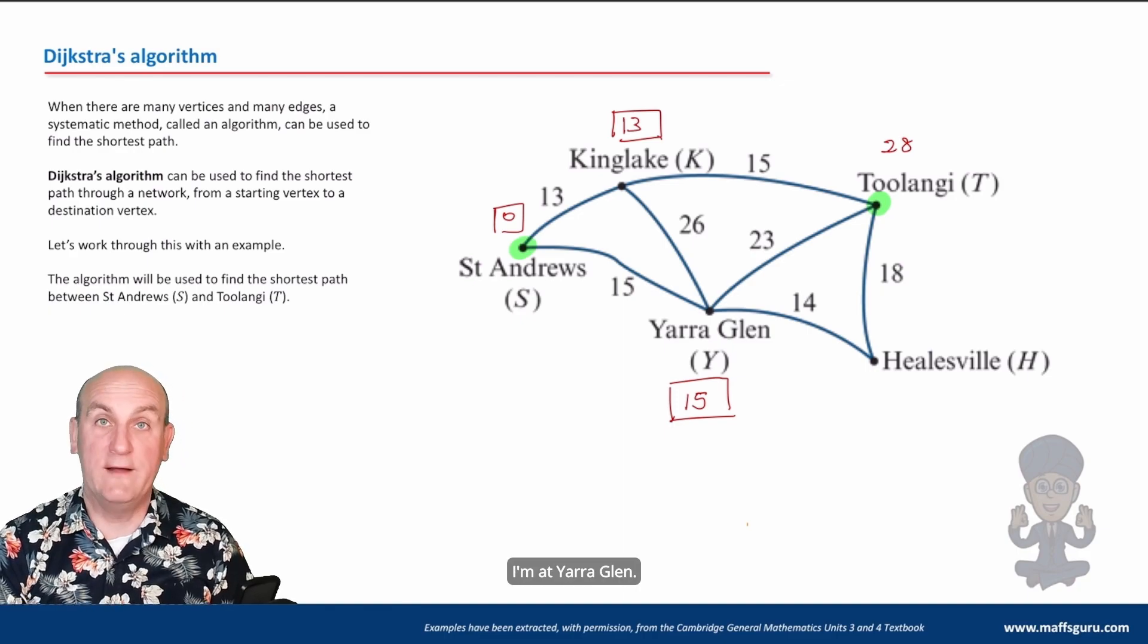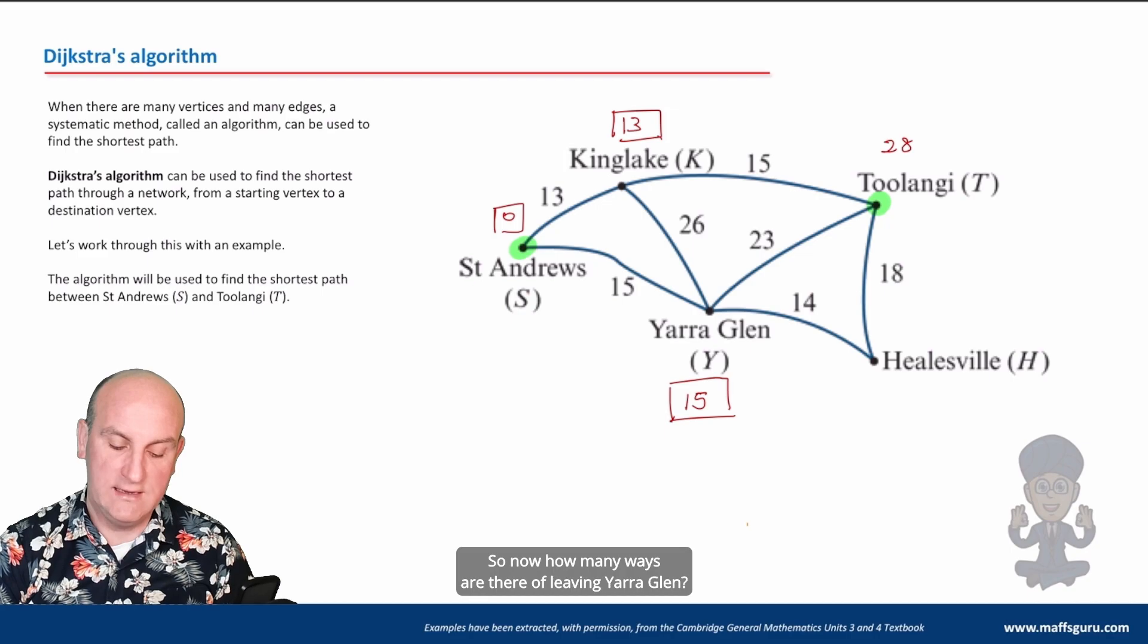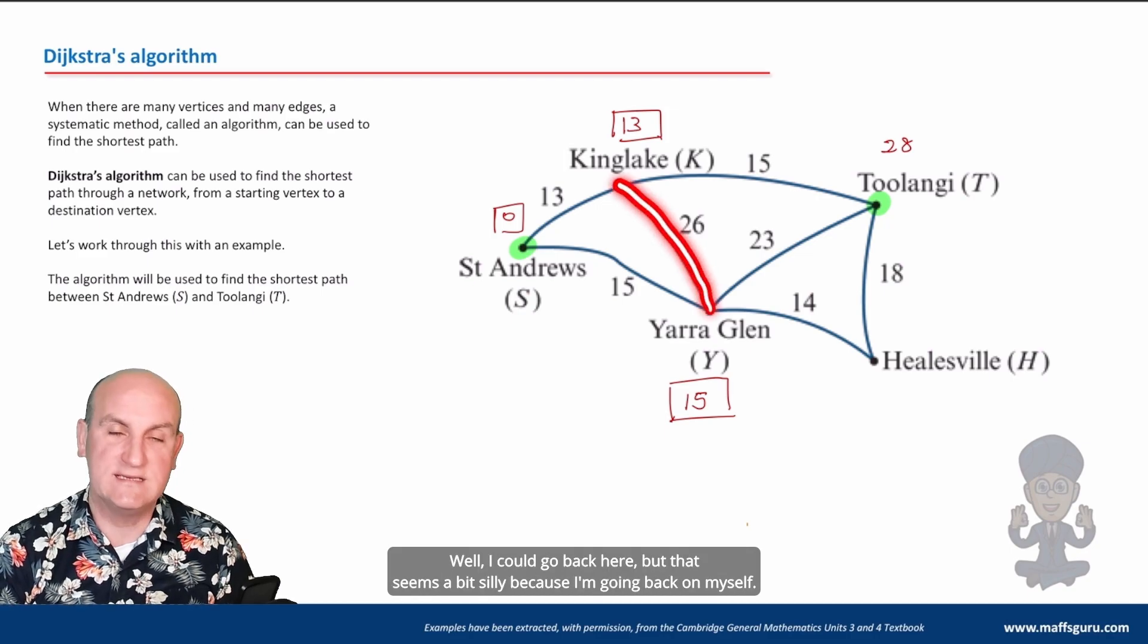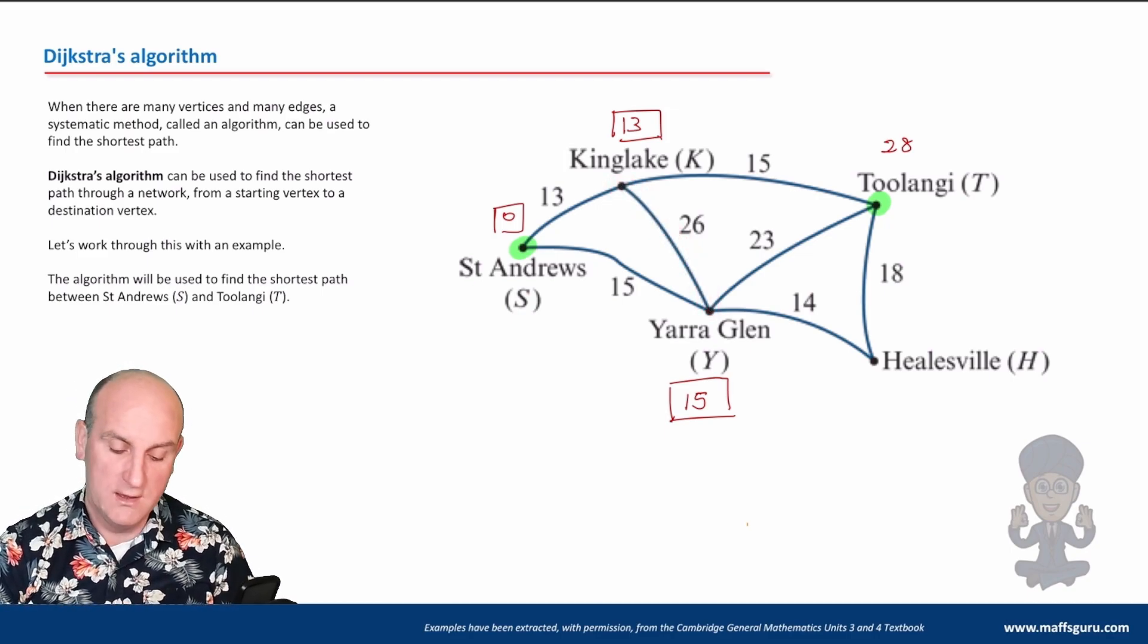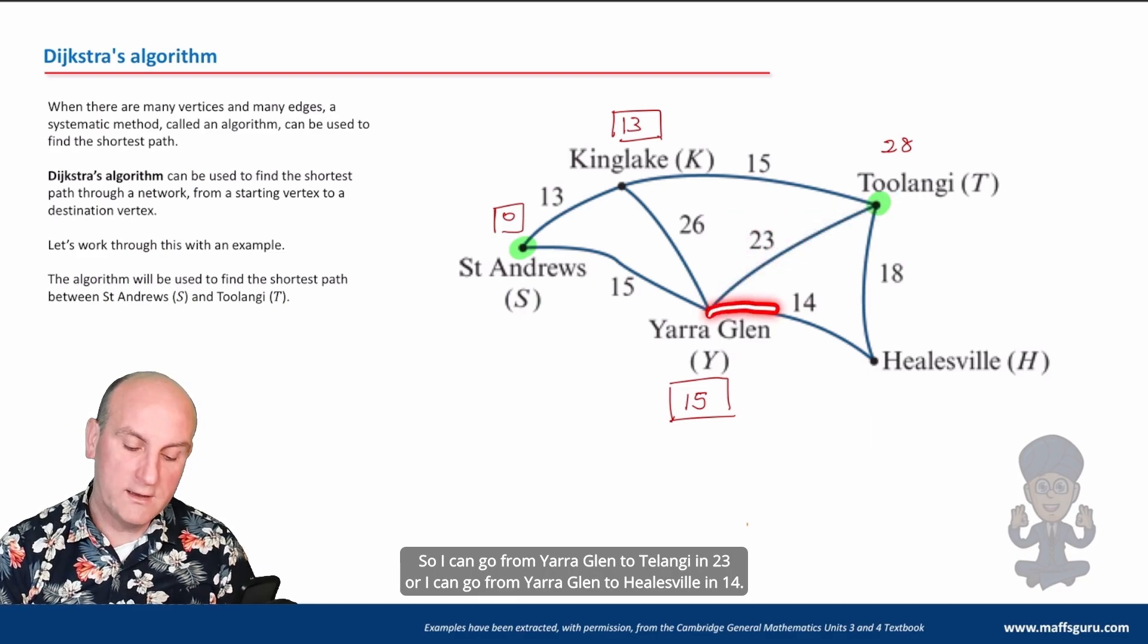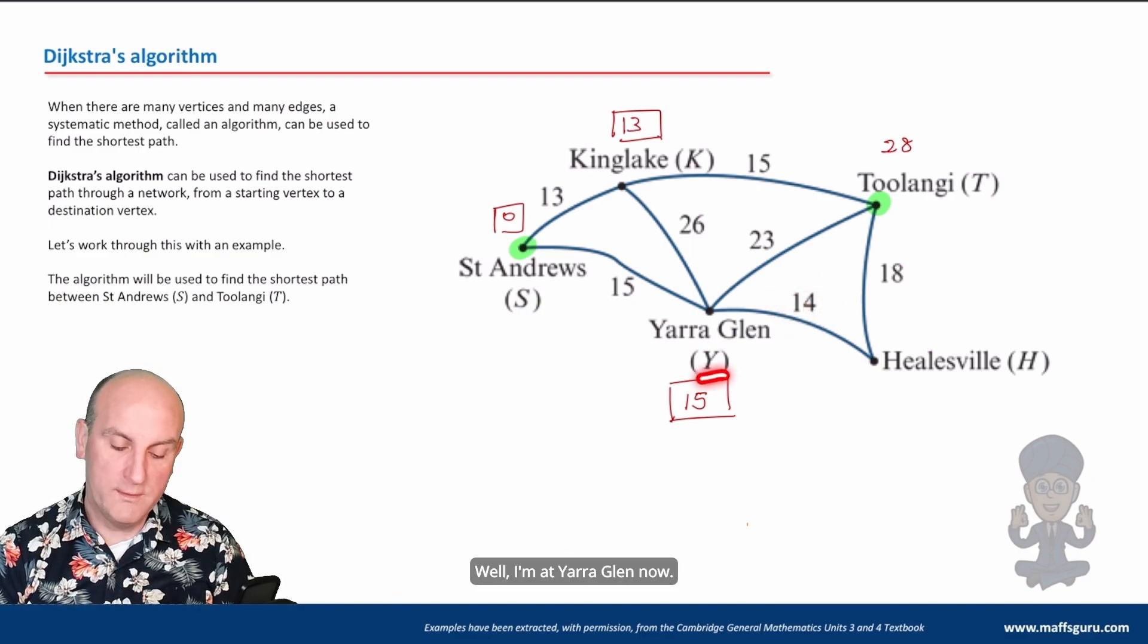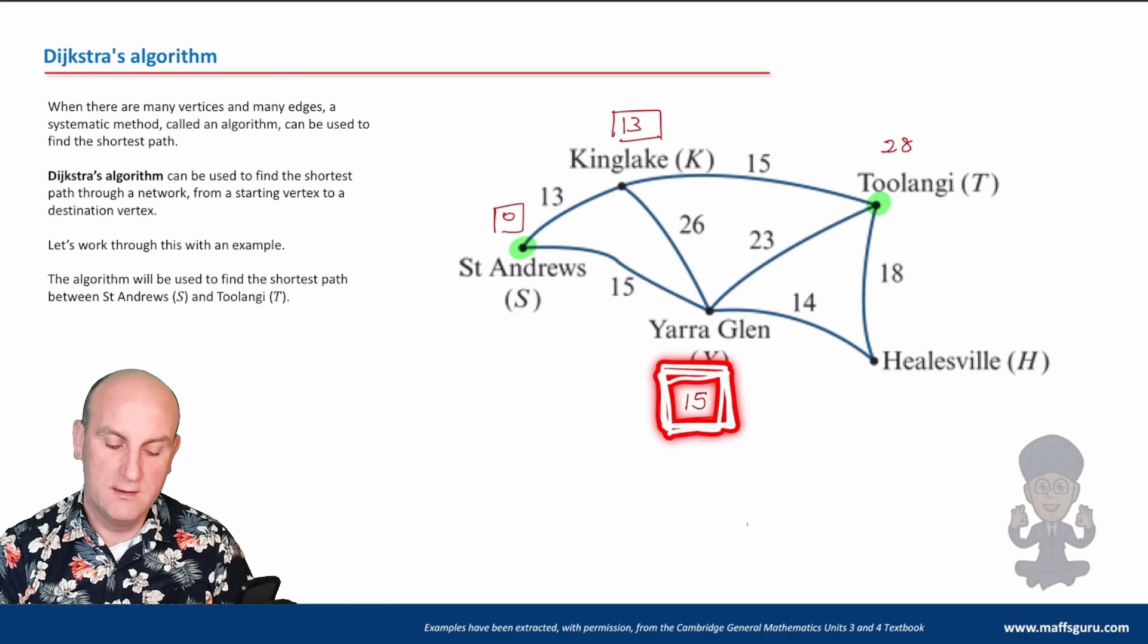All right, I'm at Yarra Glen, I've just put a box around, so now how many ways are there of leaving Yarra Glen? Well, I could go back here, but that seems a bit silly because I'm going back on myself. So I can go from Yarra Glen to Toolangi in 23, or I can go from Yarra Glen to Healesville in 14.